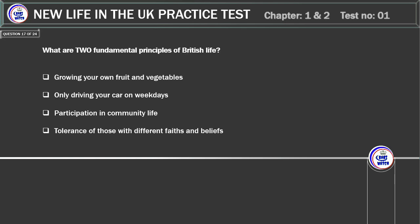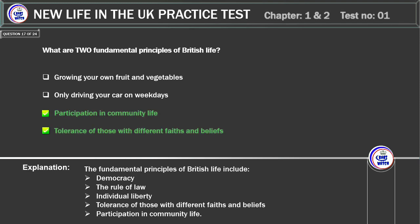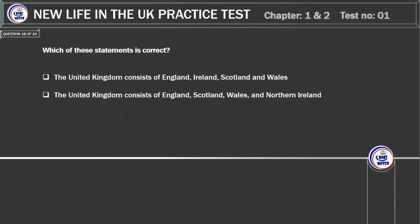What are two fundamental principles of British life? Growing your own fruit and vegetables. Only driving your car on weekdays. Participation in community life. Tolerance of those with different faiths and beliefs. Correct answer: tolerance of those with different faiths and beliefs and participation in community life. Explanation: the fundamental principles of British life include democracy, the rule of law, individual liberty, tolerance of those with different faiths and beliefs, and participation in community life.